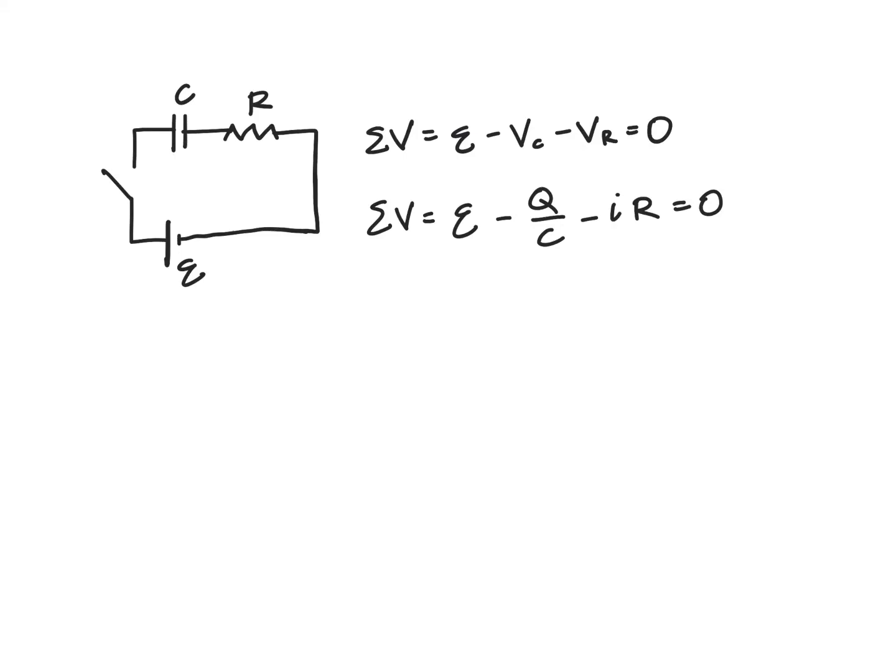So now that we have a loop equation for the potential difference through the RC circuit, we can then come up with an expression for the charge with respect to time.